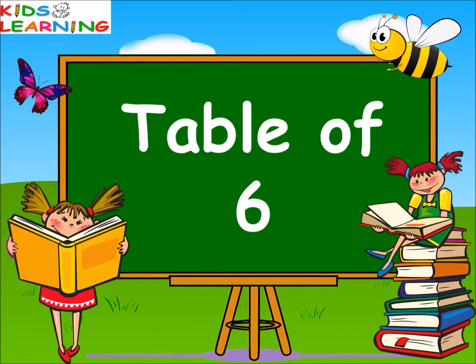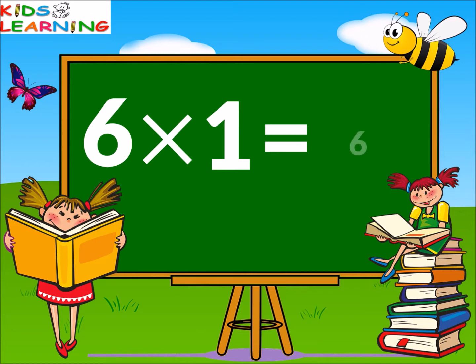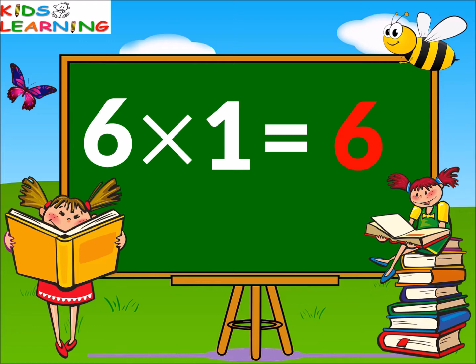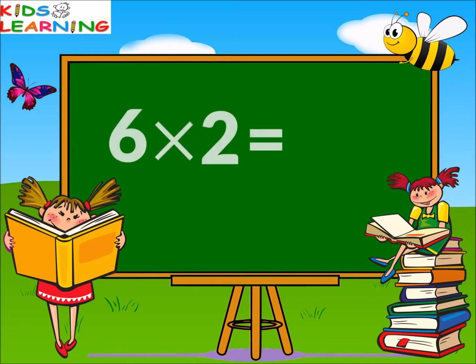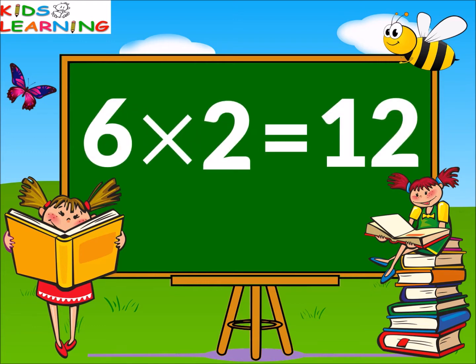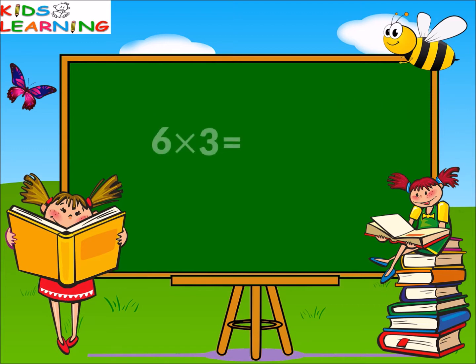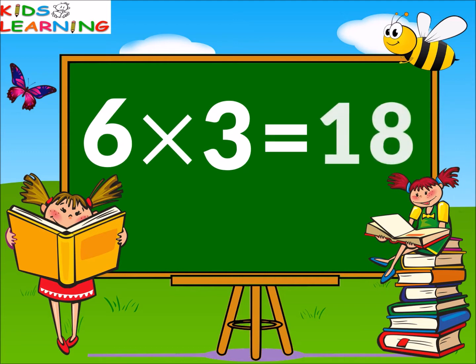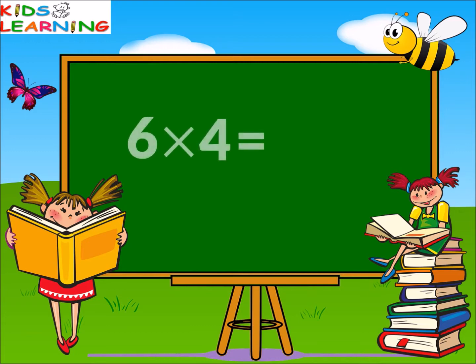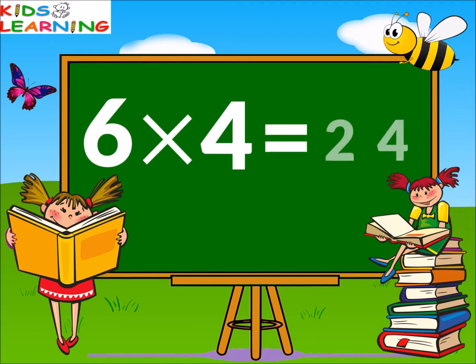Table of six. Six ones are six. Six twos are twelve. Six threes are eighteen.